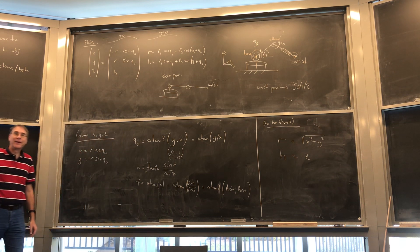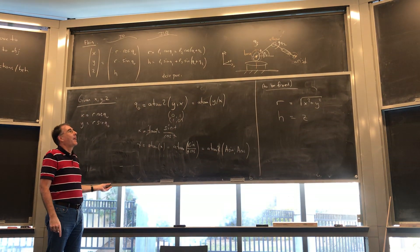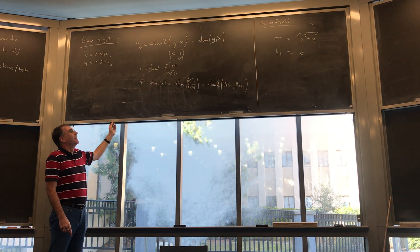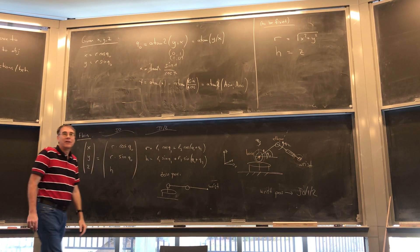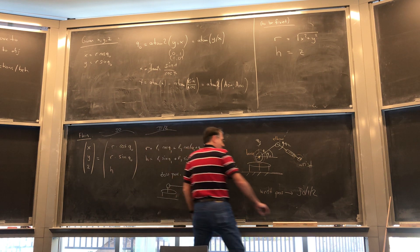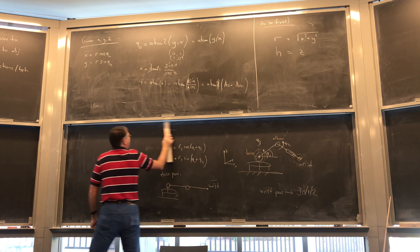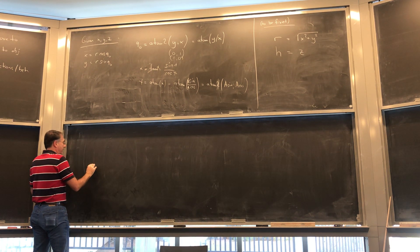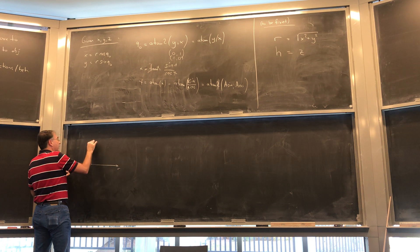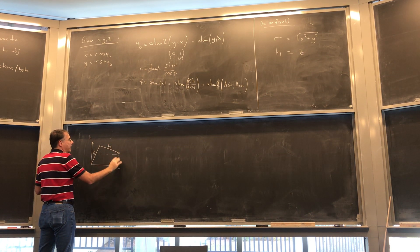I also hate square roots, and if you don't see it now, it will come around. So now we're in the plane. Do you agree that we now have an R and an H, and we have a triangle with L1 and L2 like this, and we're given those coordinates. How do you solve those triangles? You guys remember the cosine rule?